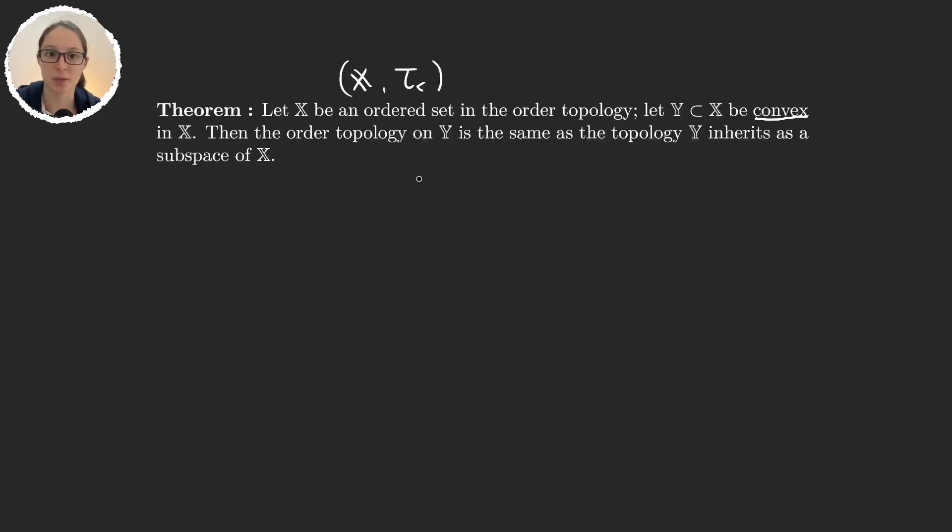So, let's give everything a few names. The order topology on Y, I'm going to denote it as tau restricted to Y, the order restricted to Y. And the topology Y inherits as a subspace, I will denote it as tau Y, and to not forget that it's from the subspace super S.